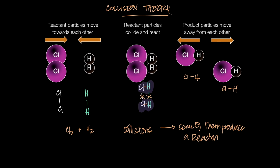Those collisions that do produce a reaction are given a technical term — they are called effective collisions. Even when hydrogen and chlorine collide, not all collisions will be successful. There are three things that have to happen for a reaction to take place: one is they have to collide, but not all collisions are successful — only some of them are effective collisions.